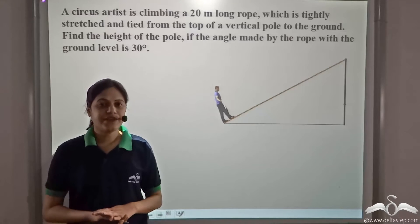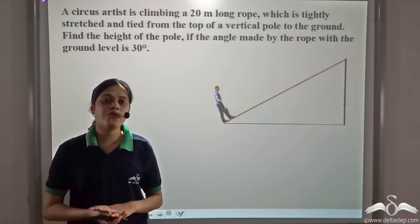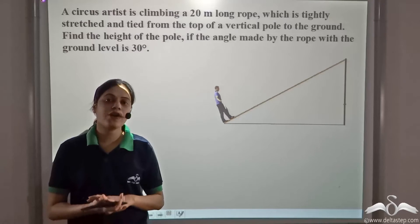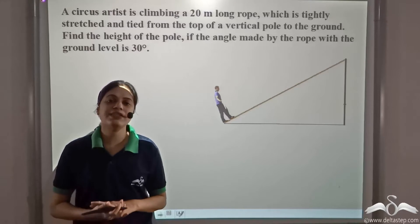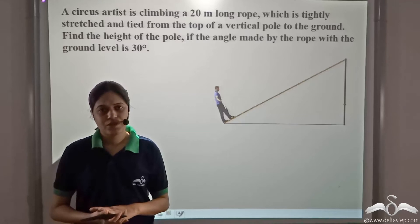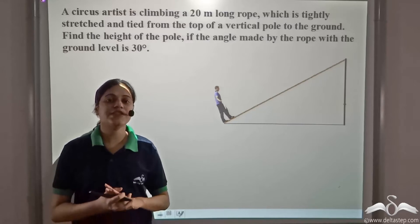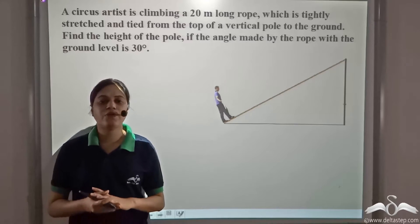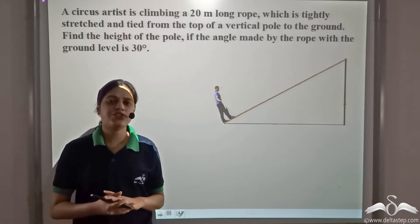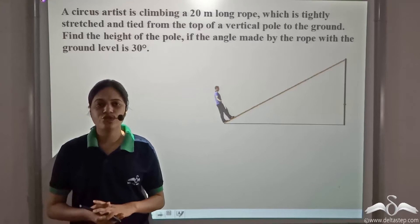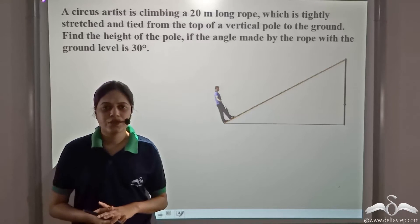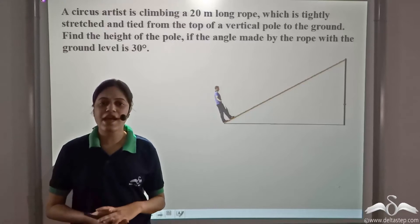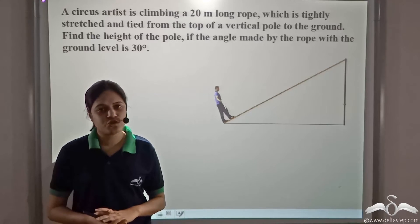We have seen how we can use trigonometry to find distances or heights which would otherwise be very difficult to measure. However, we have learnt six trigonometrical ratios and it is very important to decide which trigonometric ratio to use to solve a given problem. Let's solve a few problems and see how we can decide which trigonometric ratio to use.